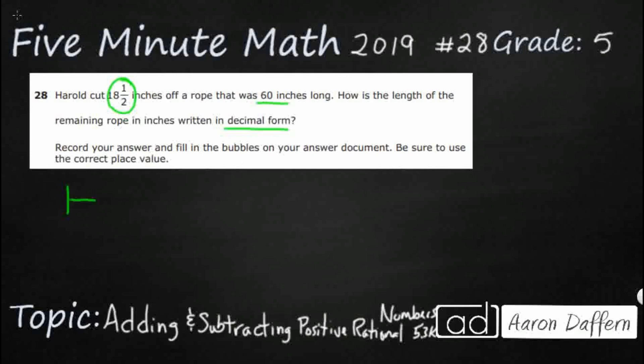Let's see if we can draw a strip diagram to just capture exactly what we're doing here. So we've got our whole up here. We know we've got 60 inches and then we've got two different parts. So we can think of it as a part-part whole. So here's my 18.5. That's what he's cutting off. And then my question is, what is this right here? What's the leftover?